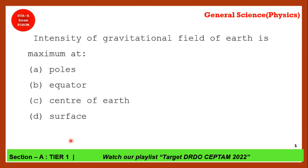The next question: intensity of gravitational force is maximum at which place — center of earth, equator, poles, or surface? The correct answer is poles. The intensity of gravitational field is maximum at the pole. Just remember this by heart.